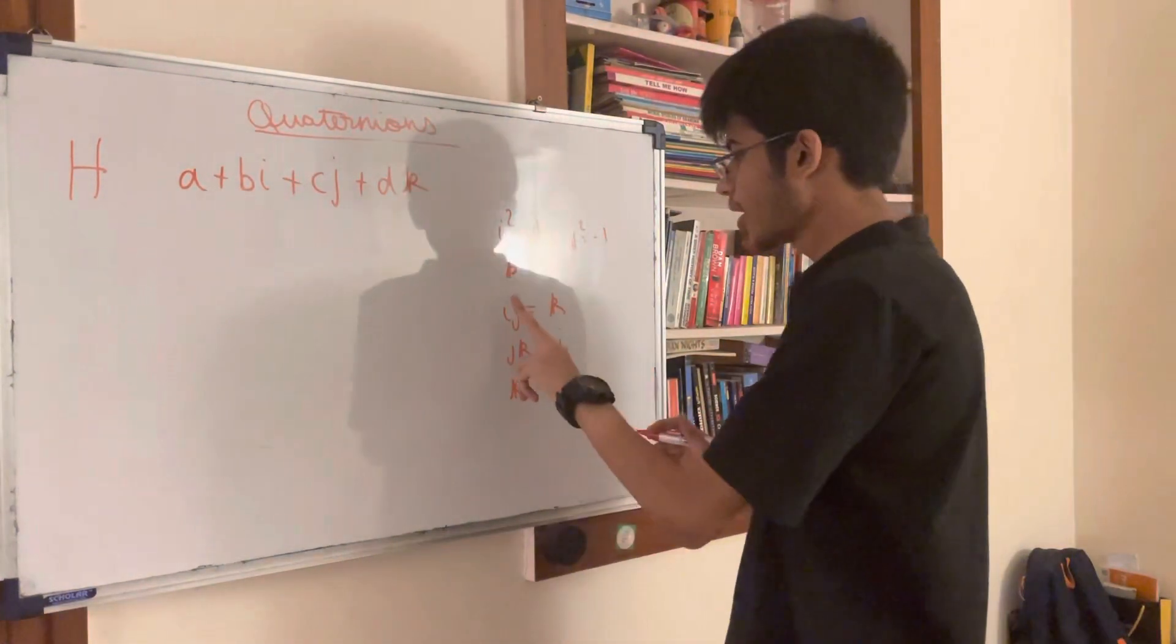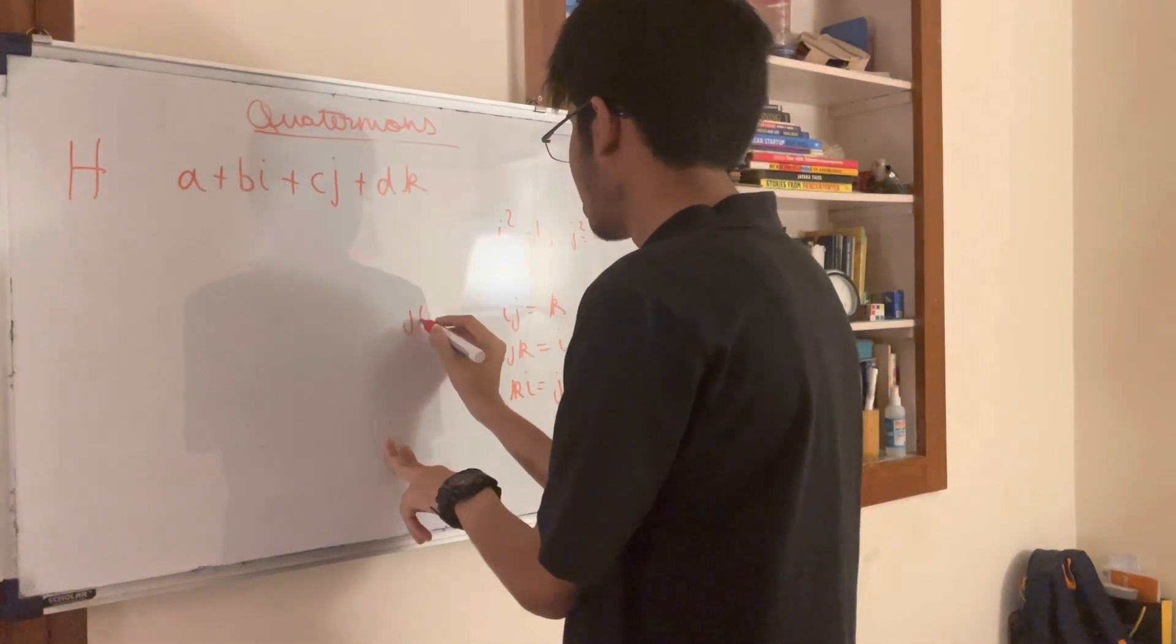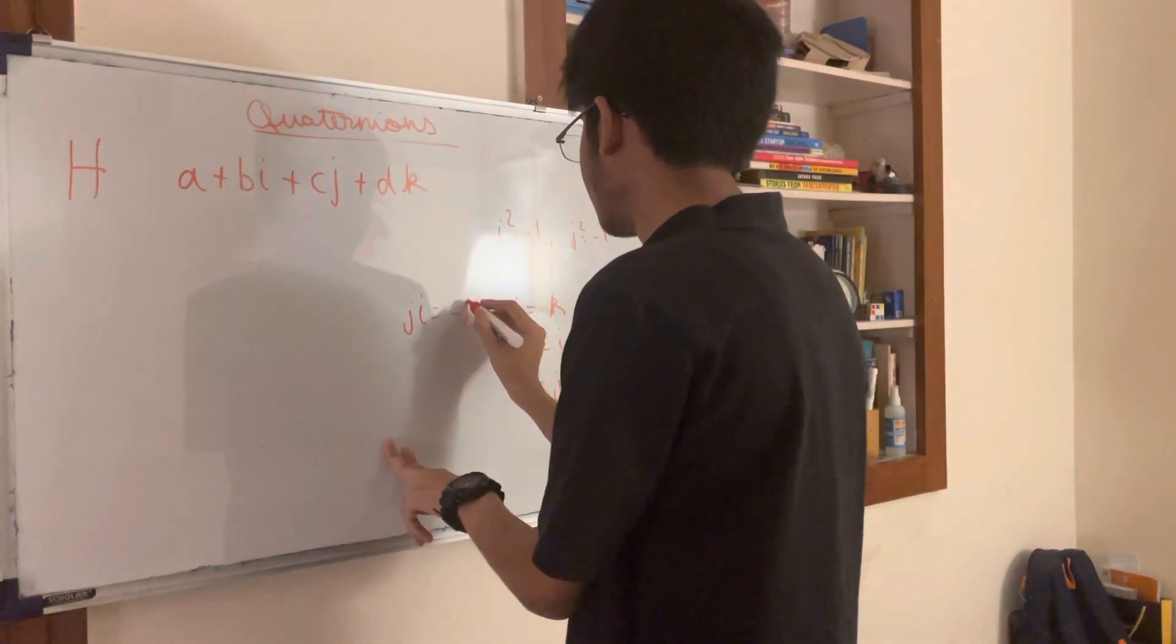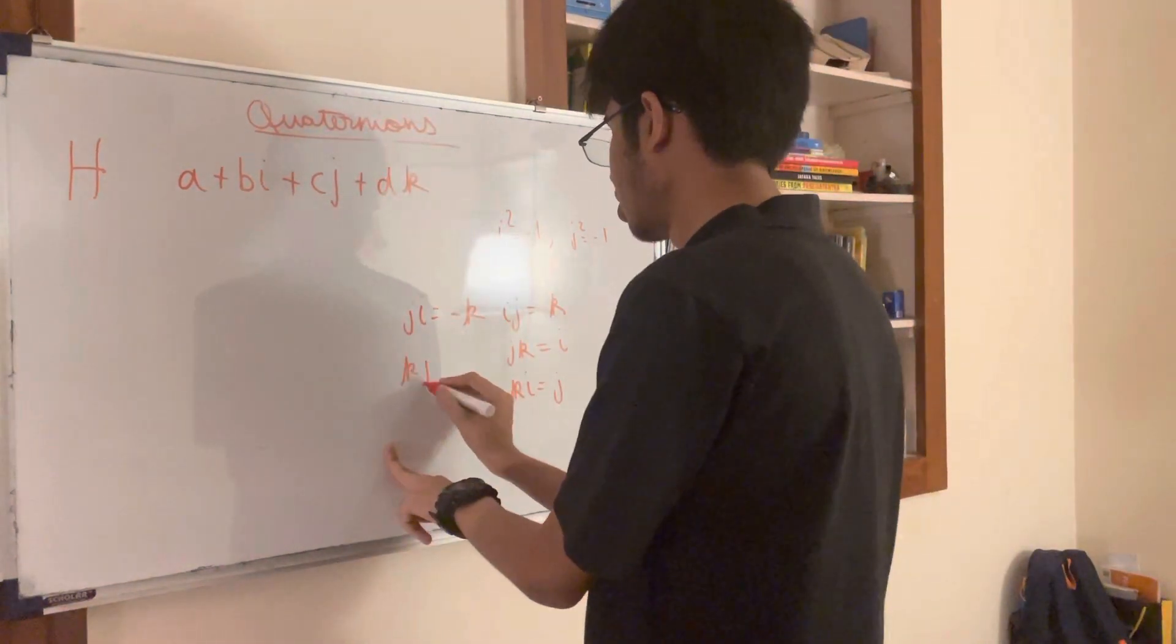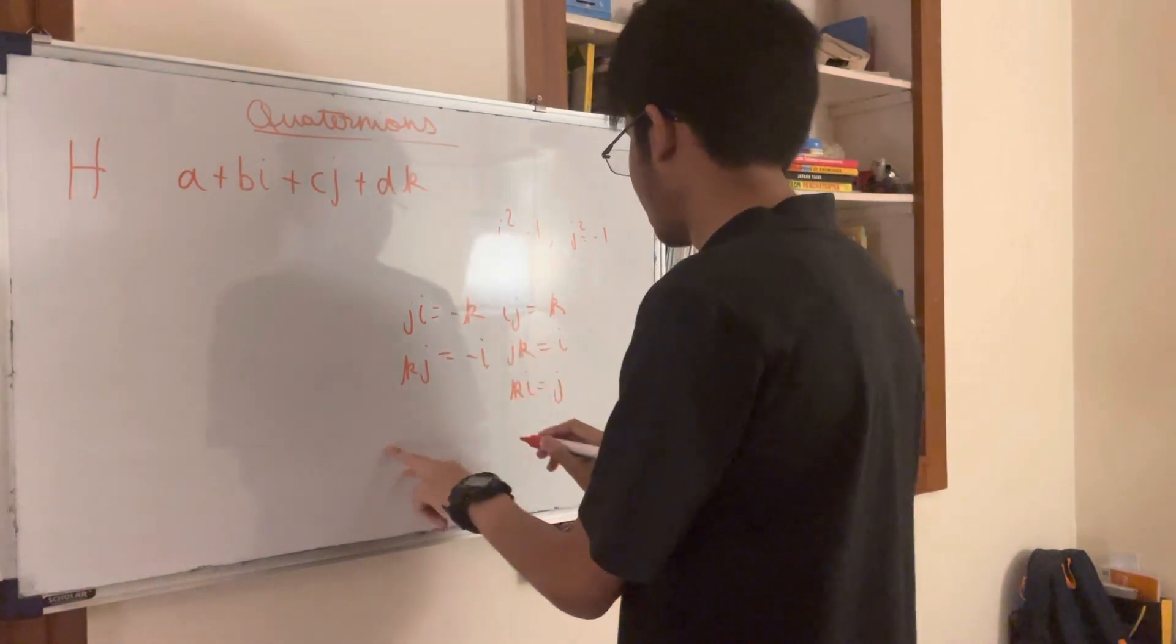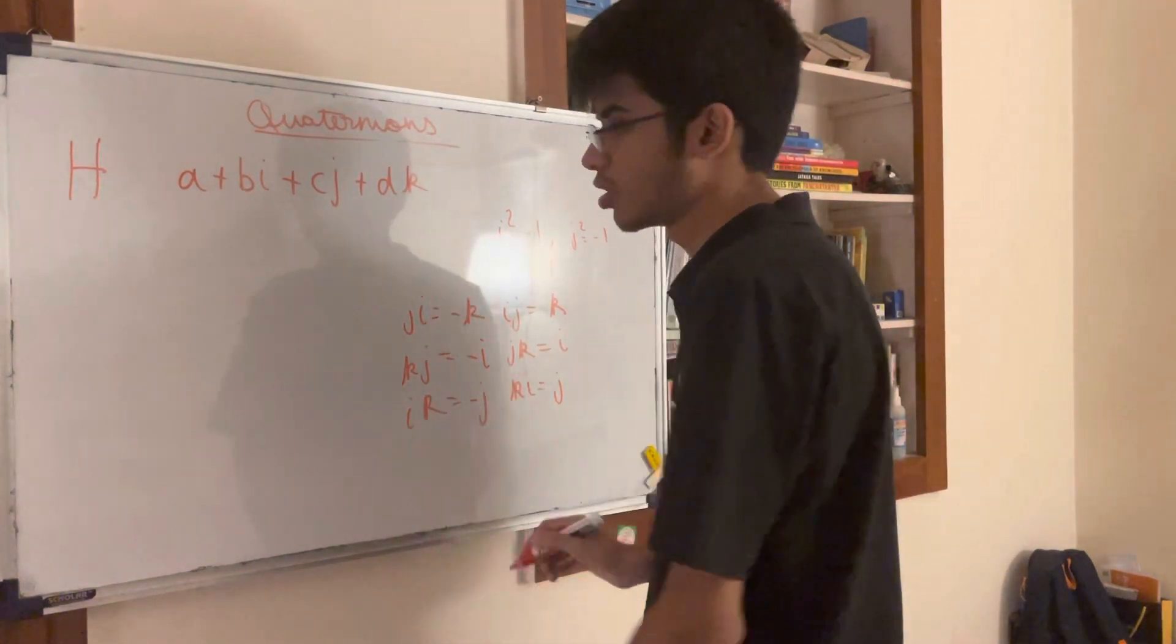Similarly, if we swap them: j into i equals minus k, k into j equals minus i, and i into k equals minus j.